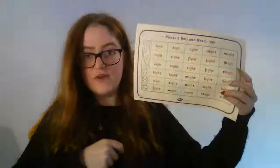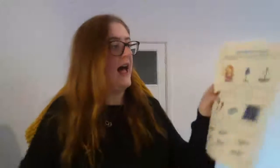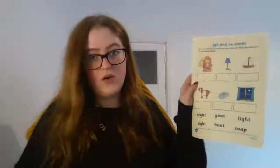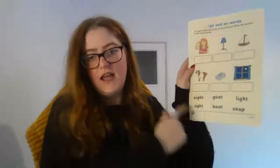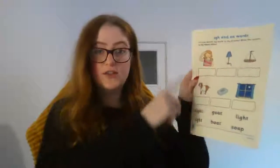Set 2: you've got the trigraph 'i' and you have got your roll and read, and then you have got 'i' and 'o' words. So you look at the picture, you've got the words underneath, and you just need to match them and write them in the box.